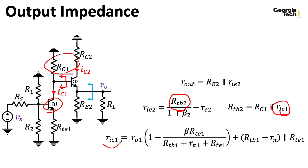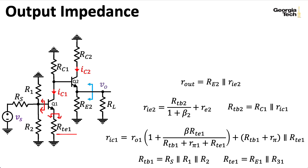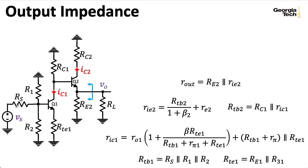RIC1 depends on the Thevenin equivalent seen looking out of the base and the emitter. The Thevenin equivalent looking out of the emitter is some combination of resistors, and looking out of the base it's RS, R1, and R2 in parallel. RS shows up in this formula, which means it shows up in RTB2, which means it shows up in the output impedance formula. So the output impedance of the structure depends on the output impedance of whatever is driving it. This is the sort of issue that I think isn't widely appreciated about BJT amplifiers.